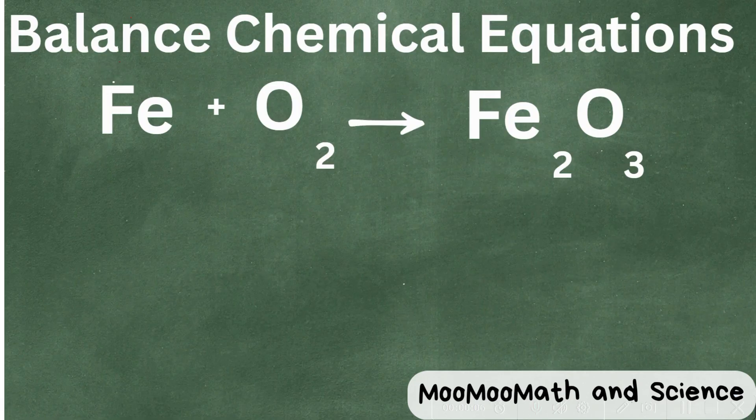We have iron plus oxygen, and it's going to yield iron 3 oxide. It's also called ferric oxide on this side. Let's begin.